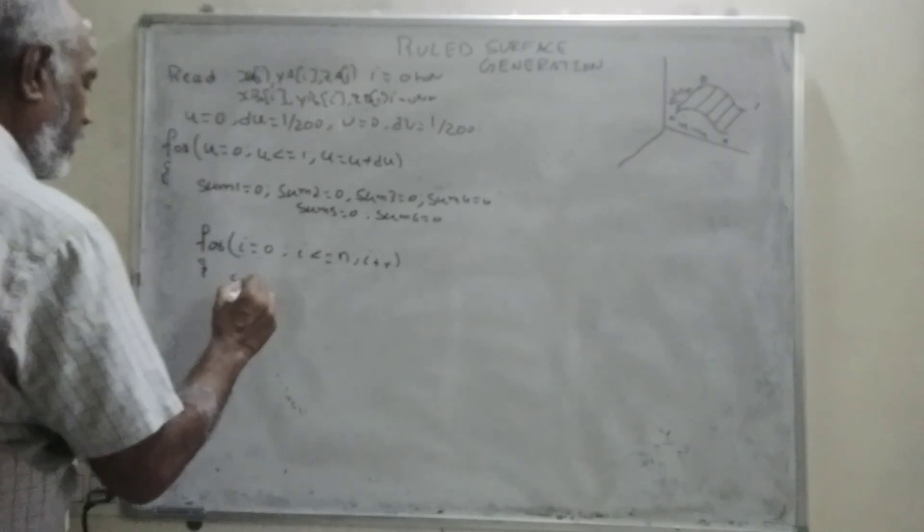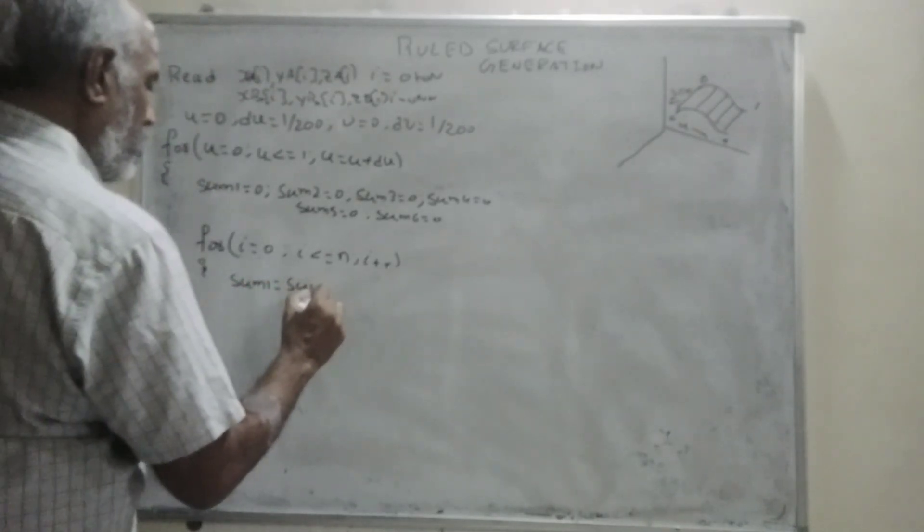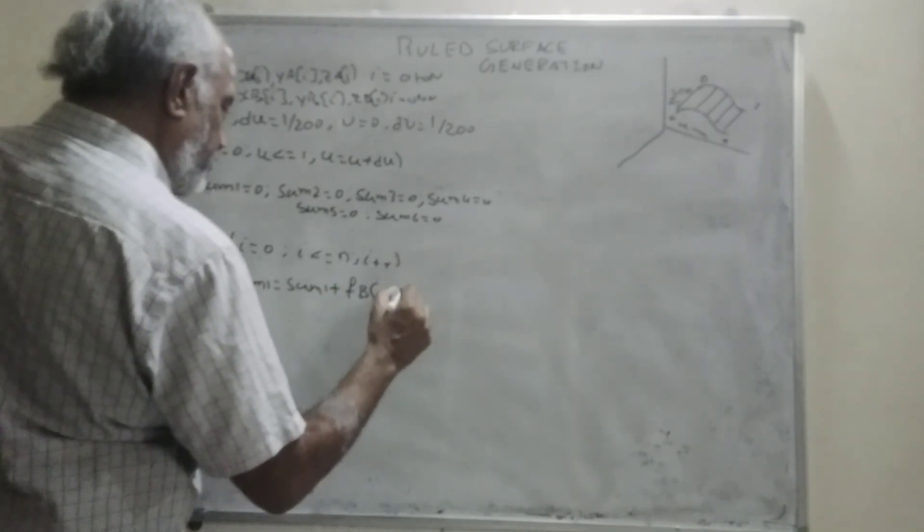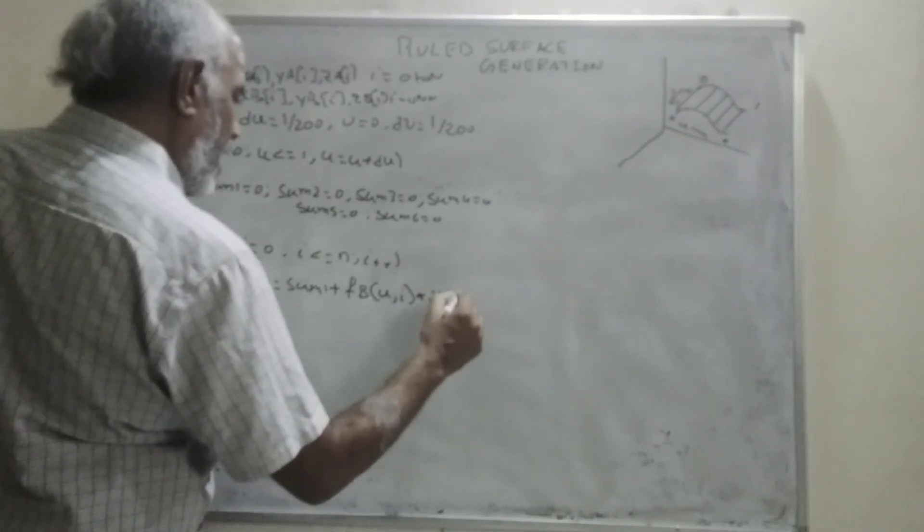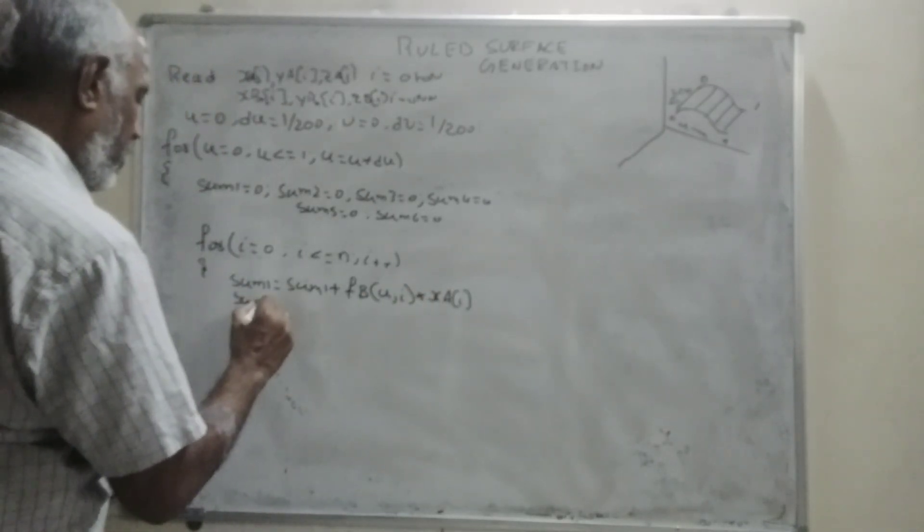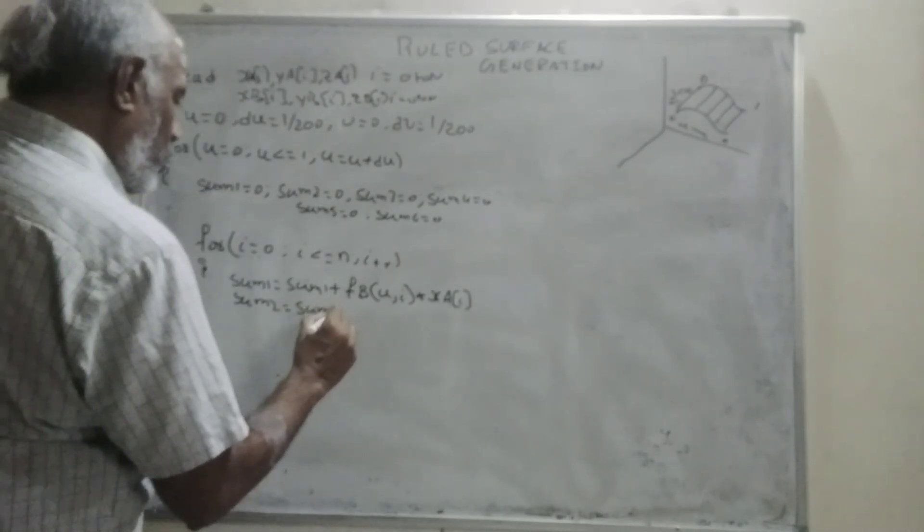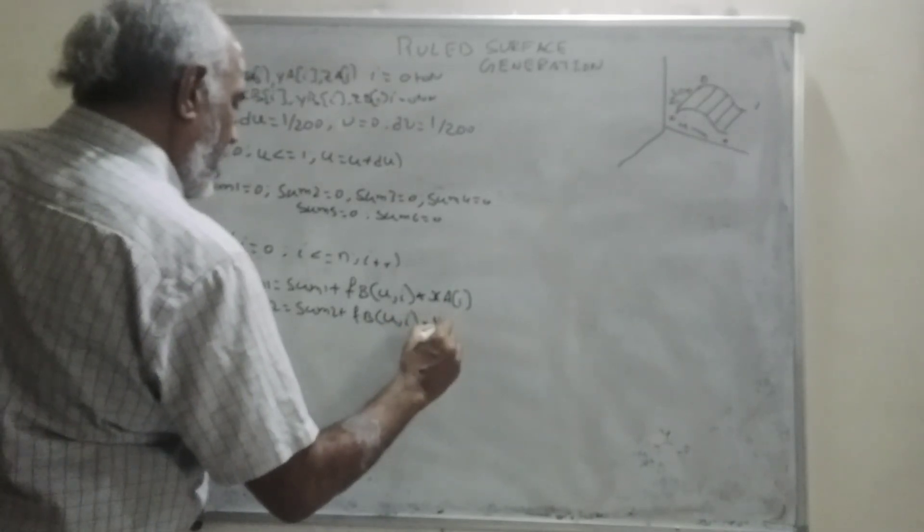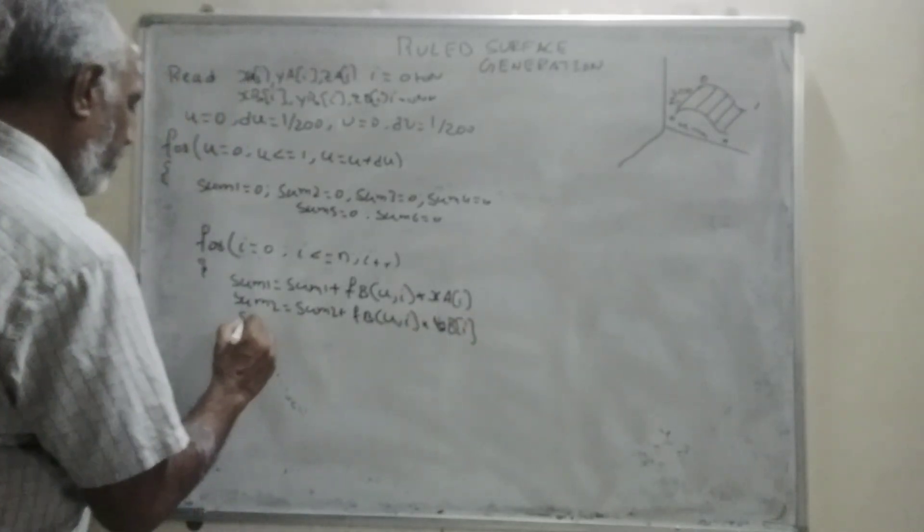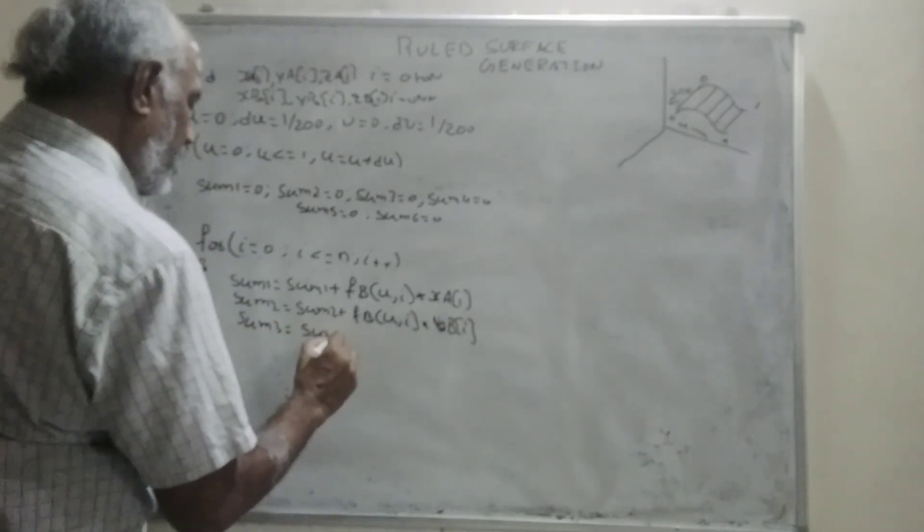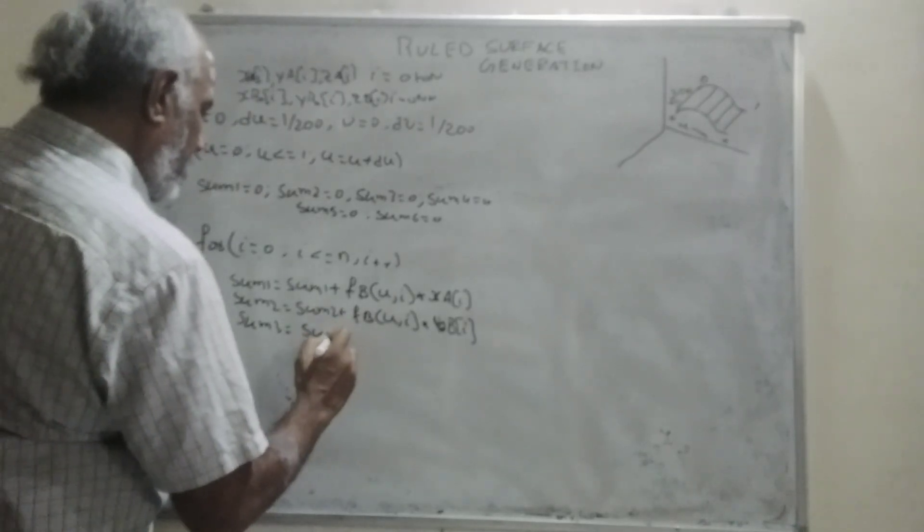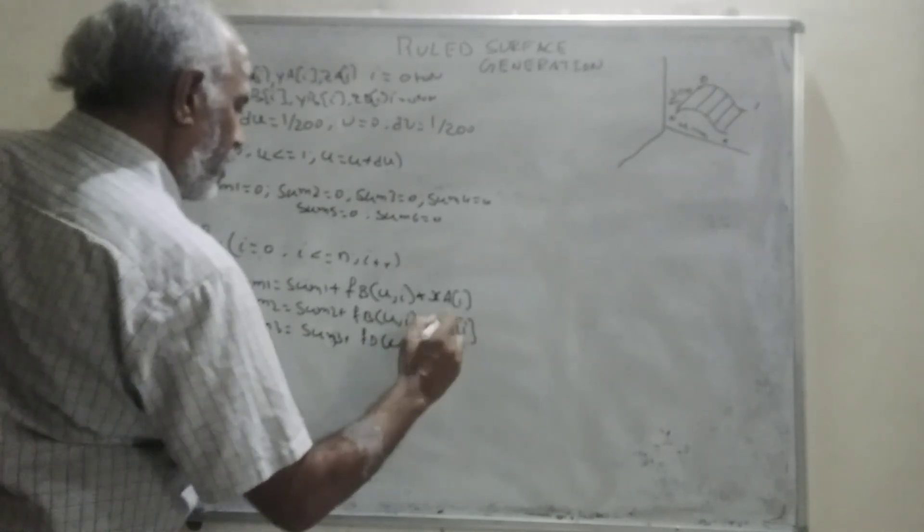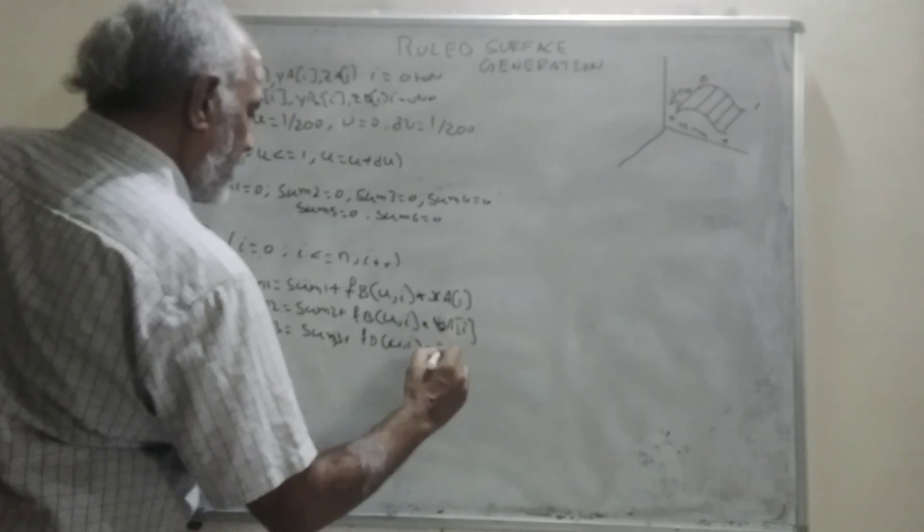And then, sum1 equals sum1 plus, here a Bezier function is here, f_b u and i into x_a_i. Sum2 equals sum2 plus f_b u and i into y_b_i. Sum3 equals sum3 plus f_b u i into z_a_i.